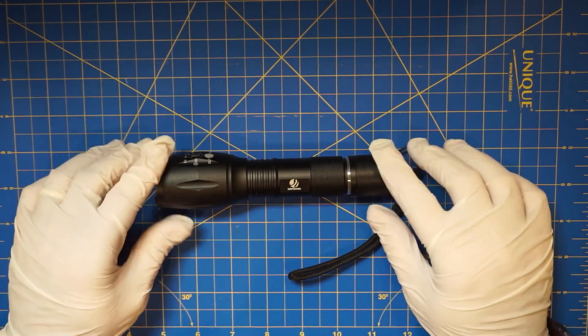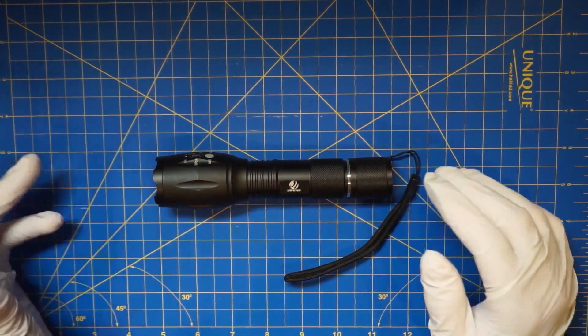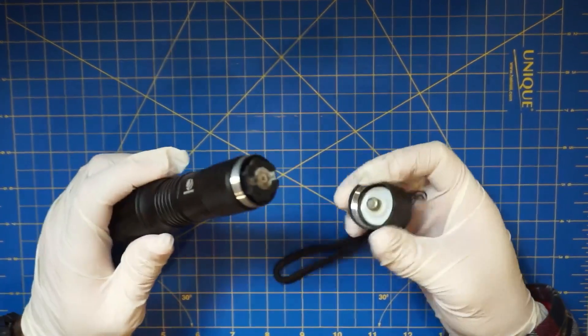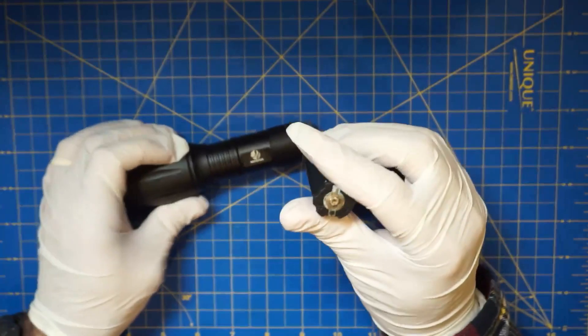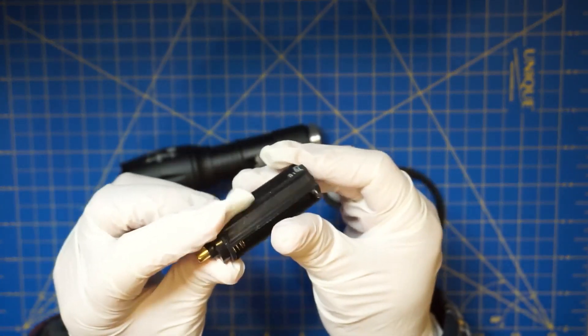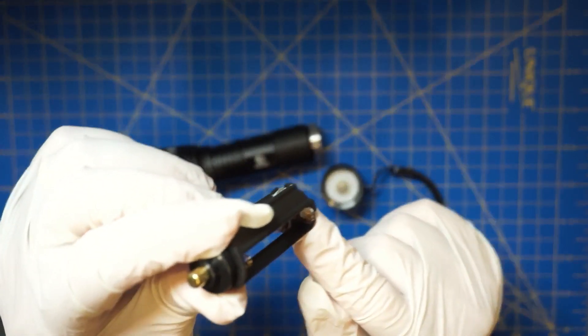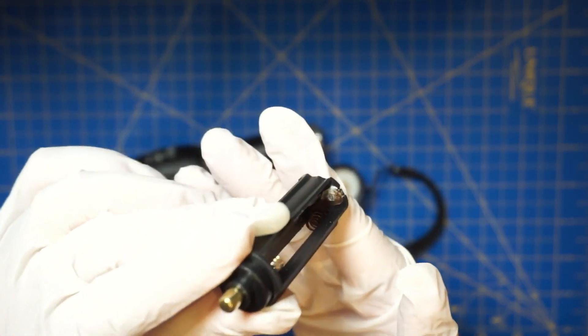Leaving batteries in unused equipment or electronics like this flashlight will ultimately result in something we've probably all seen - battery leakage. The batteries are inside, and you can see there's a little bit of corrosion in there, in the battery compartment.